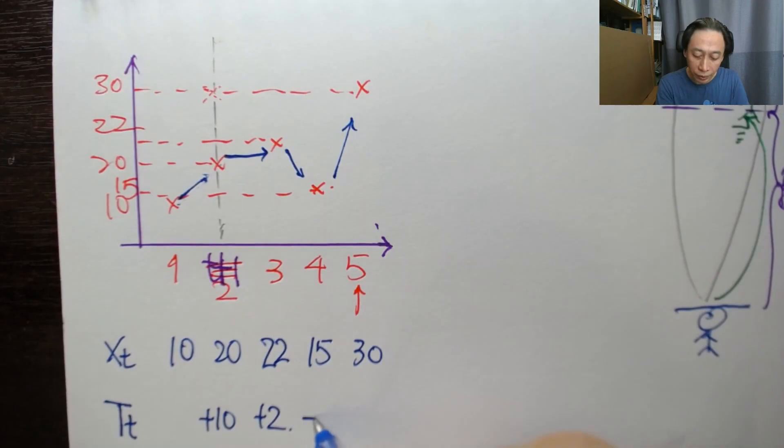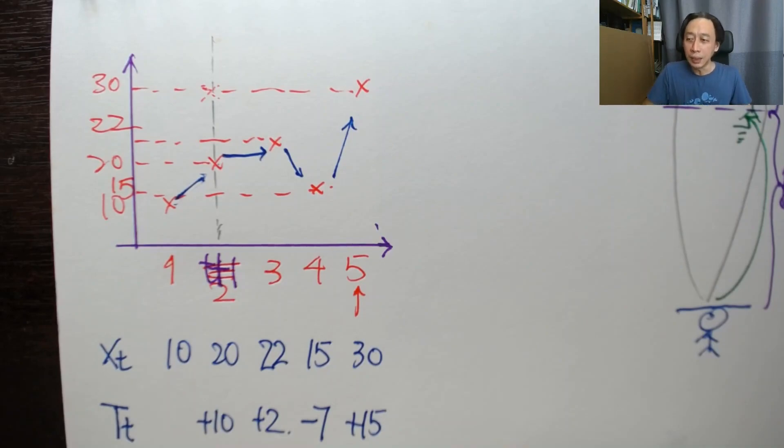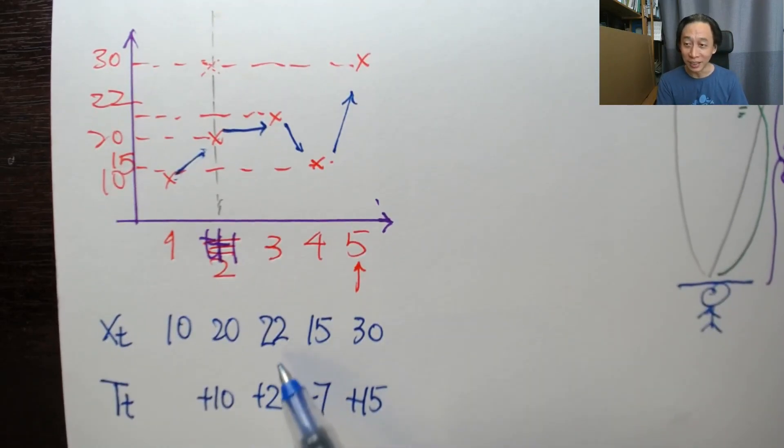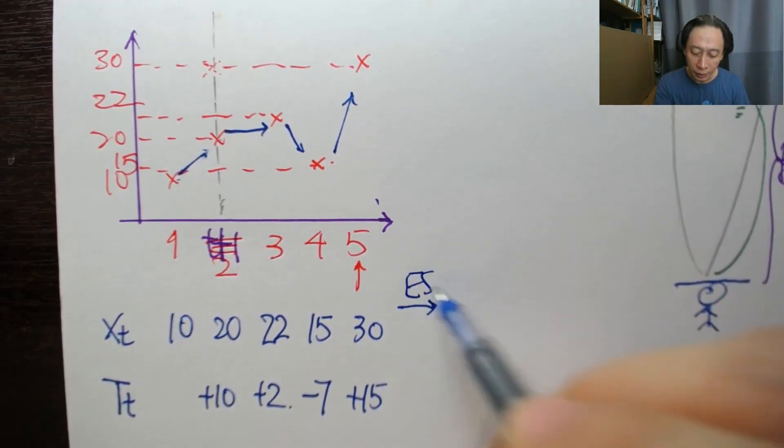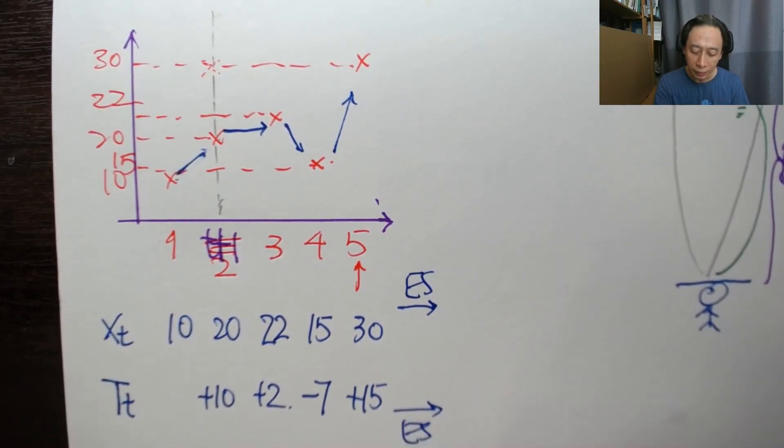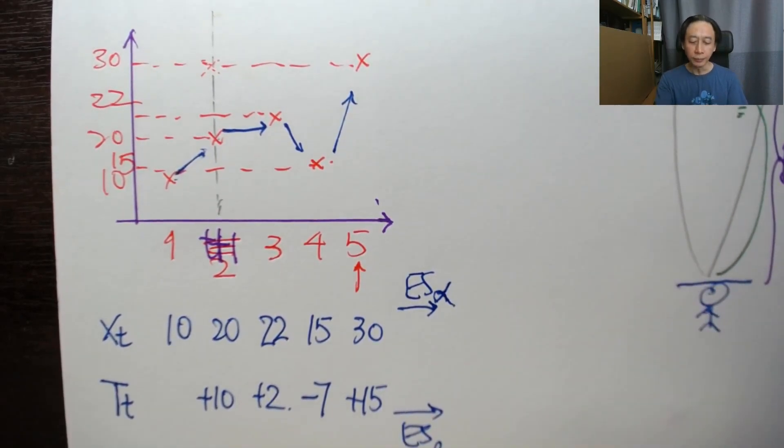There's a rise in 10 units, a rise in 2 units, a drop in 7 units, and a rise in 15 units. I've extracted the trend as another set of data. This is hidden inside the data but we've extracted it out and can now treat it as if it were separately observed. We can apply ES on this and apply another ES on the baseline.